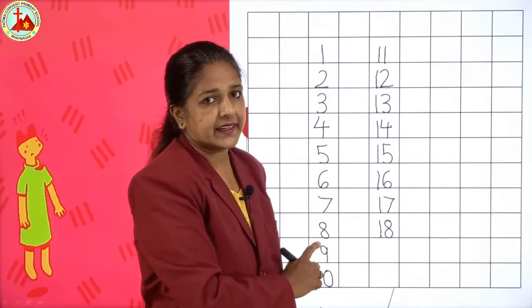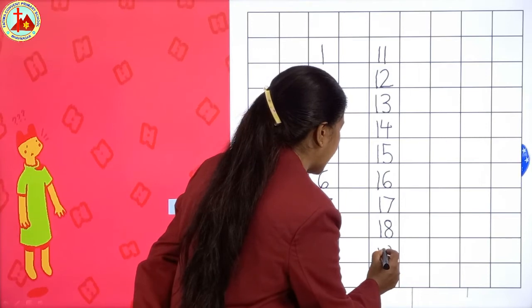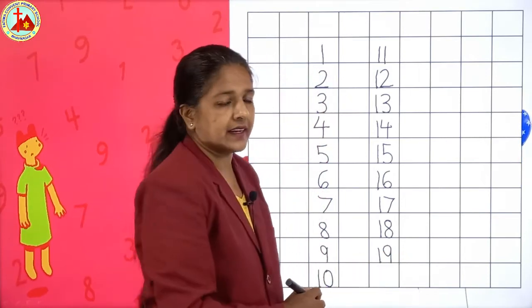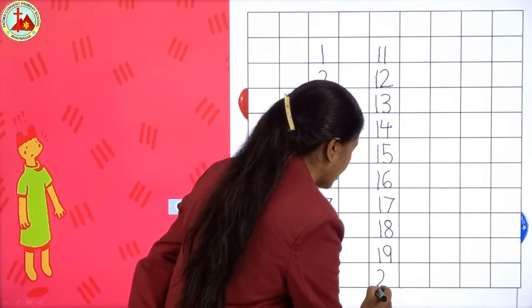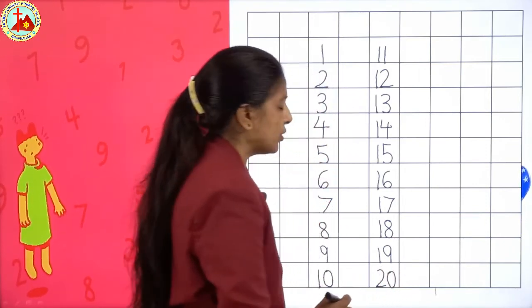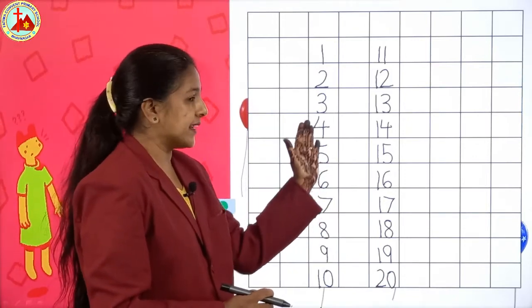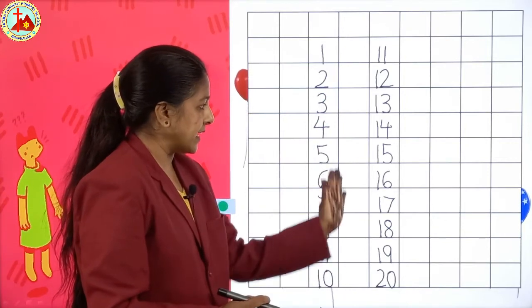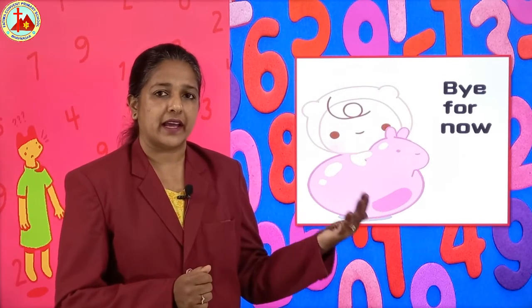After 18, 19: 1-9, 19. And after 19, 20: 2-0, 20. So like this you all have to write 1 to 20 in your square line book. And children, you all have to say 1 to 50 and write 1 to 20 in your square line book, as I have taught you.